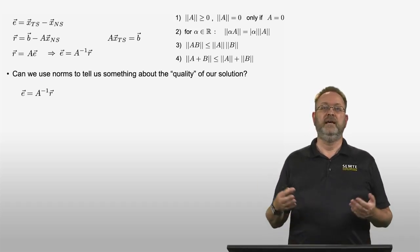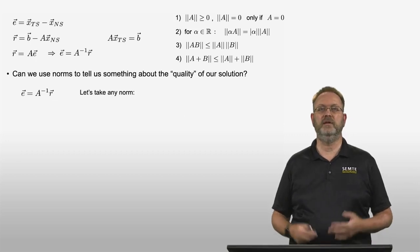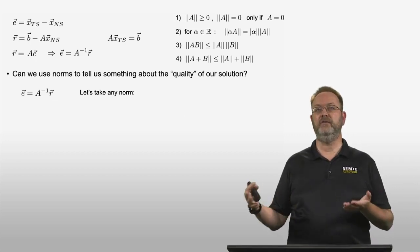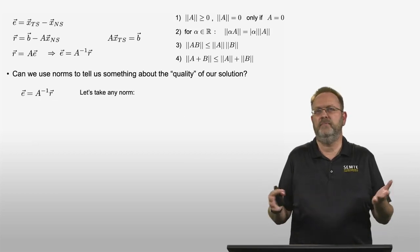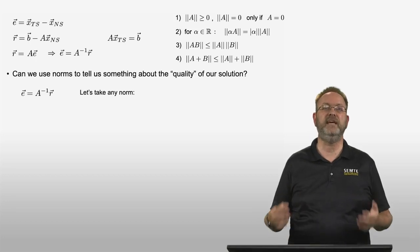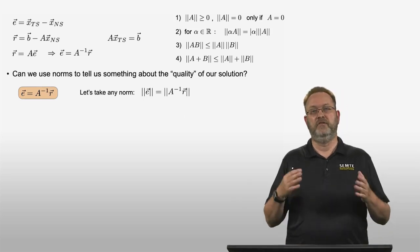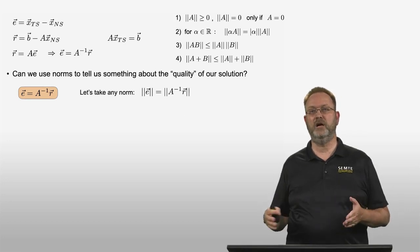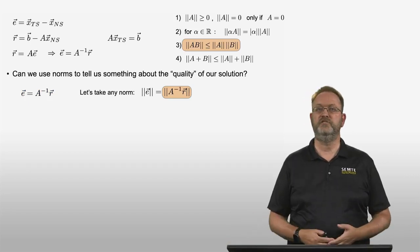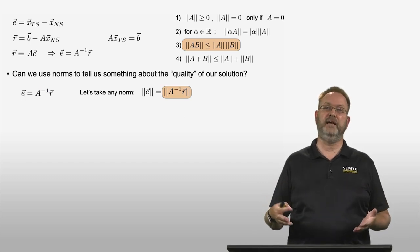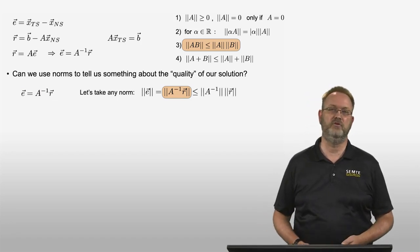Going back to the question: can I use norms to tell me something about how good my numerical solution is? Starting with the equation that the error is equal to A inverse times the residual vector, let me take a norm of this equation — just any one of them, but you have to stick with one norm throughout the entire calculation. So on the left-hand side the norm of the error vector is equal to the norm of A inverse times the residual vector. Using property number three of norms — that the norm of a product is smaller or equal to the product of the norms — this will be smaller or equal to the norm of A inverse times the norm of the residual vector.